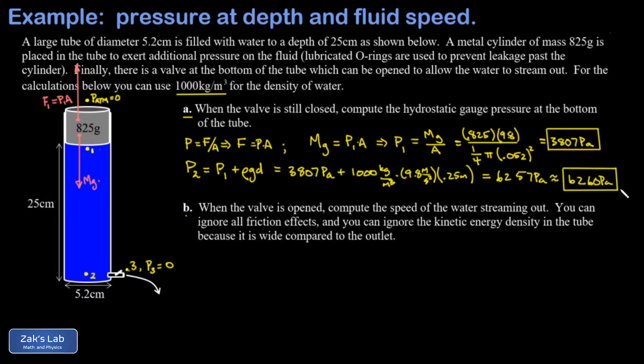In Part B we have a fluid dynamics problem. The idea is to apply Bernoulli's equation to find v3, the speed of the fluid coming out. We're told we can ignore all effects of friction and ignore the kinetic energy density in the tube itself because it's so large compared to the valve.